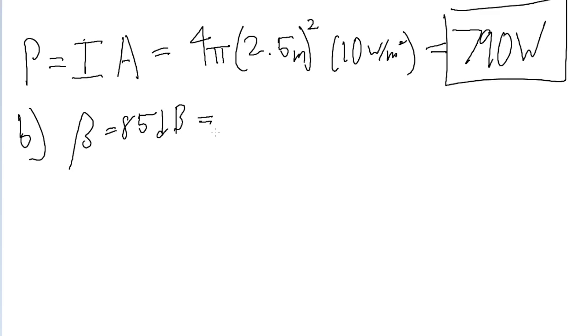By finding the intensity that this sound level has to correspond to. So 85 decibels is once again equal to 10 times the log base 10 of I over I0. We'll use the exact same process we used in part A to solve for I. We'll divide both sides by 10, raise 10 to the power of both sides, and then we find that the intensity equals 10 to the power of 8.5 multiplied by I0.